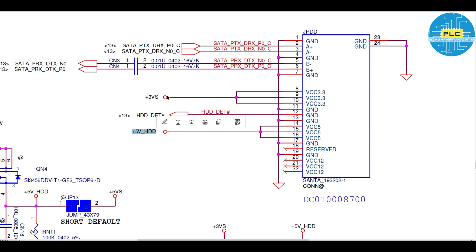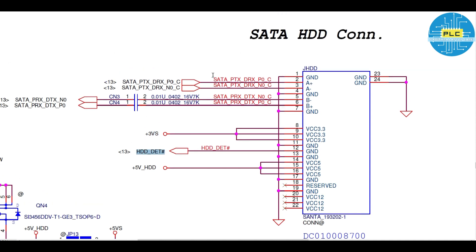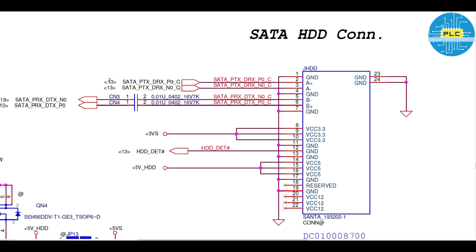These three conditions must be fulfilled: 5 volts, 3 volts, and the detect signal. Once 5V and 3V are present and the hard disk is detected, the work will start through the SATA transmitter and receiver. The transmitter positive and negative, and receiver positive and negative — the A+ and A− signals come through the PCH and communication begins.